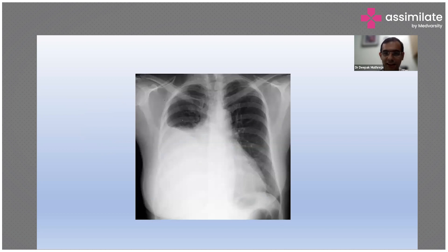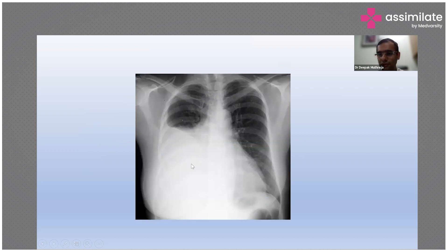Looking closely at the X-ray, the left side is fine. On the right side, we can see an effusion which is sparing the apical area — so this is a moderate effusion. This effusion is quite large, so we need to tap it.